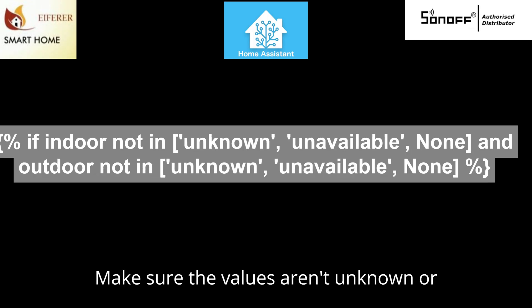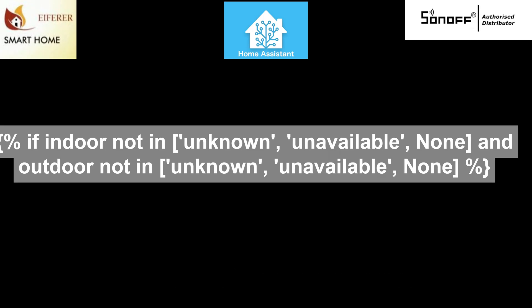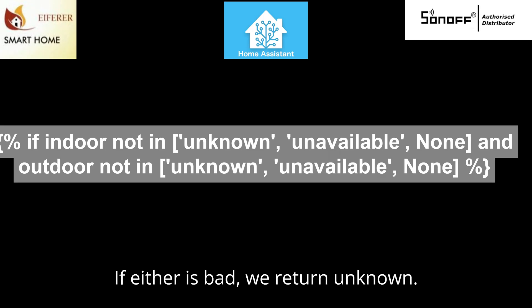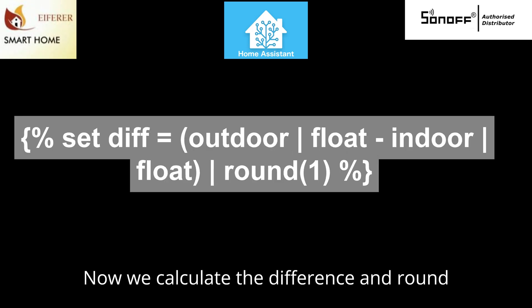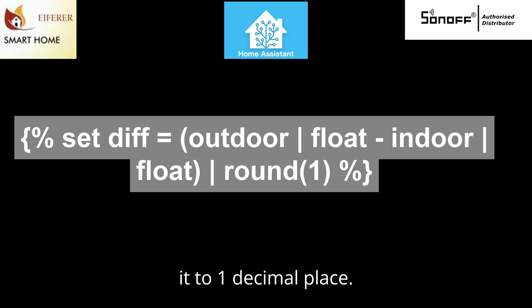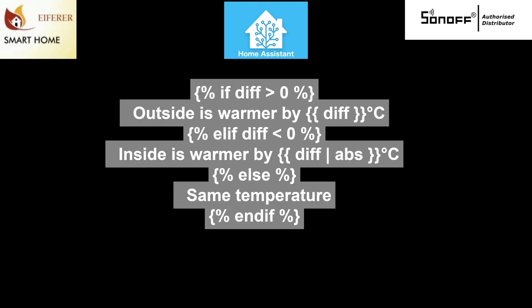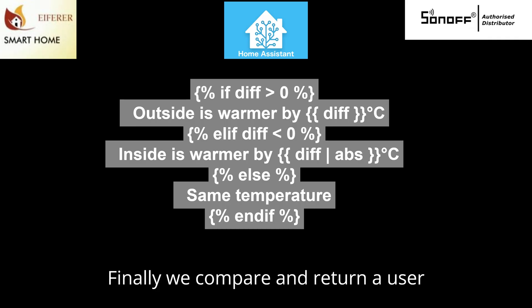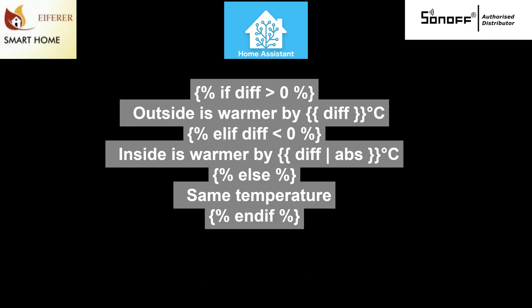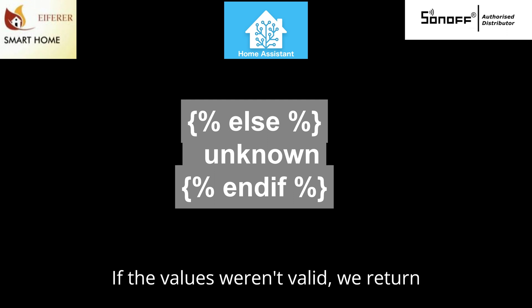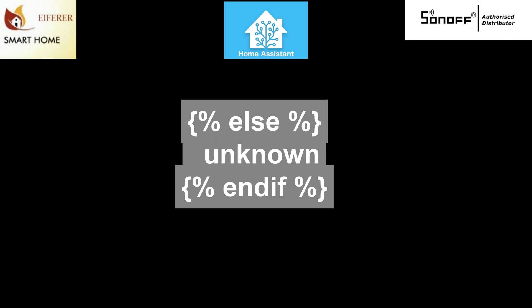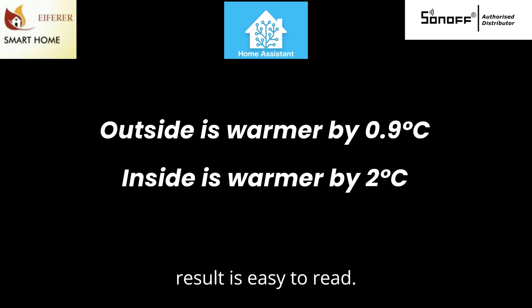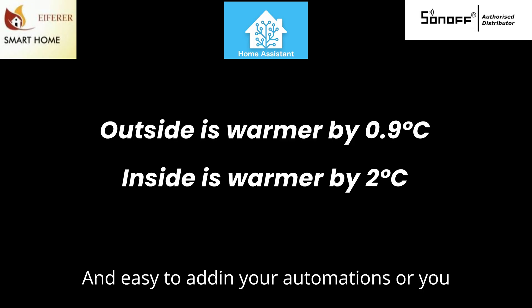We make sure the values aren't unknown or unavailable. If either is bad, we return unknown. Then we calculate the difference and round it to one decimal place. Finally we compare and return a user-friendly message. If the values weren't valid, we return unknown. The result is easy to read and easy to act on in your automations or UI.